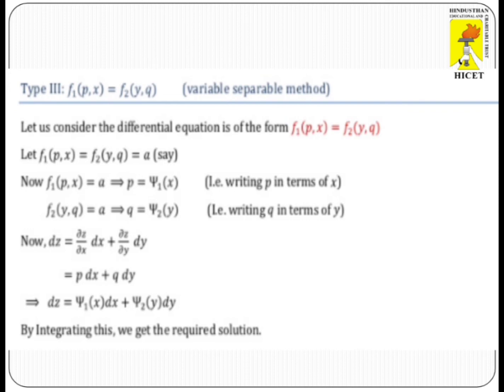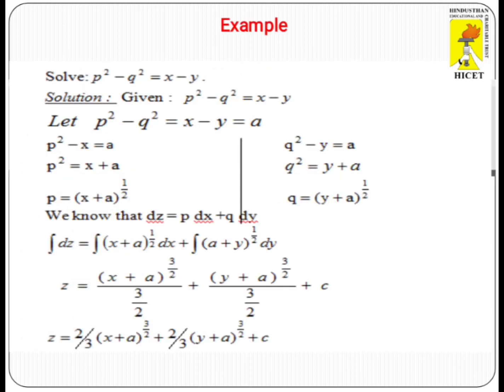In partial derivative notation, this is DZ equals P·DX + Q·DY. Substituting the values of P and Q and applying ordinary integration, we get the required solution.